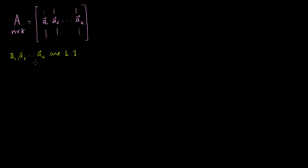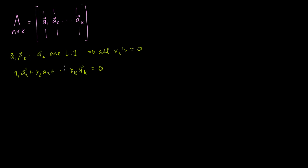What does that mean? That means that the only solution to x1 times A1 plus x2 times A2, all the way to xk times Ak, is that all of these x's have to be 0. So all xi's must equal 0. That's what linear independence implies.